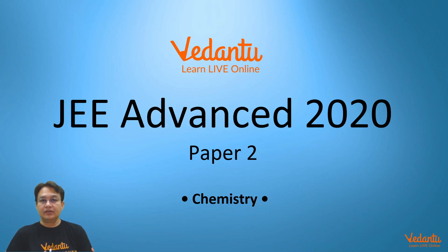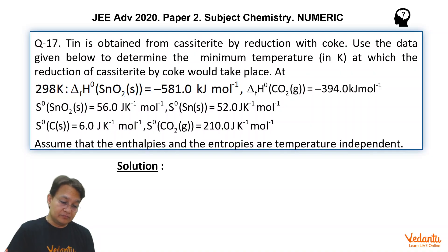Hello, I am Pushkar, Master teacher in Chemistry at Vedantu. I am discussing JEE Advanced 2020 Chemistry Paper 2 problems. This is question number 17, a numeric type which has been asked in Paper 2.